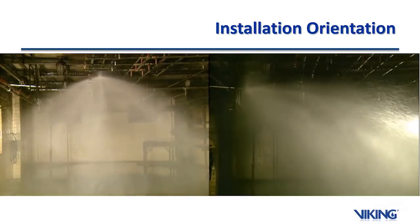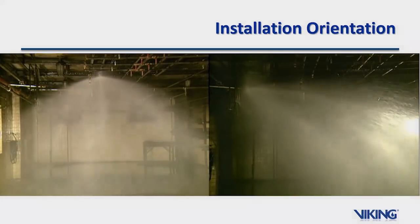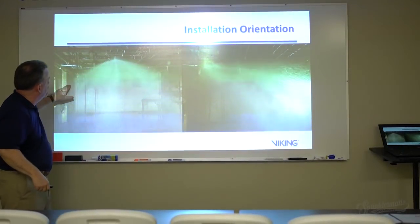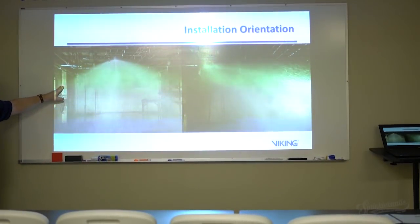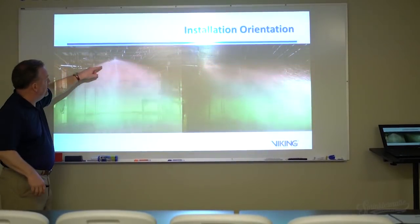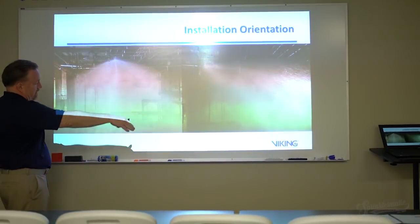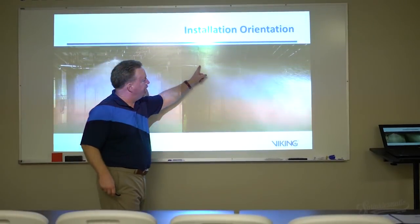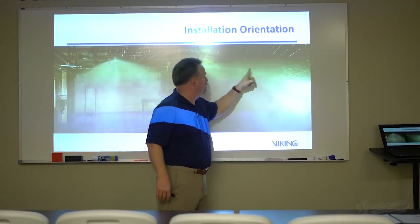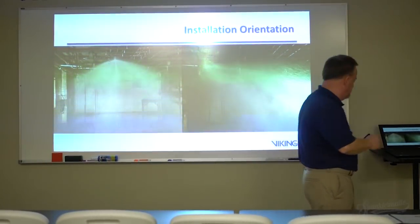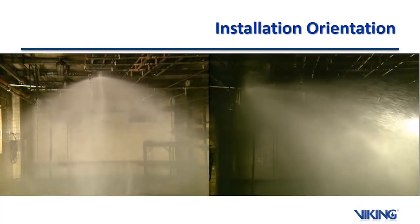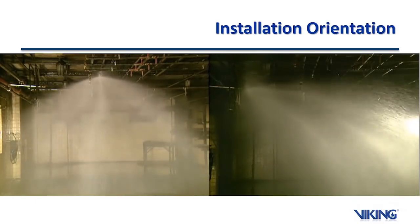Here are spray pattern examples. The standard spray pendant sprinkler creates a fairly conical shape directing water straight down into the protected floor area. The sidewall sprinkler, on the other hand, shoots water out as far as it can reach based on the deflector and pressure. An upright sprinkler in the same area would show the same kind of conical spray pattern as the pendant.